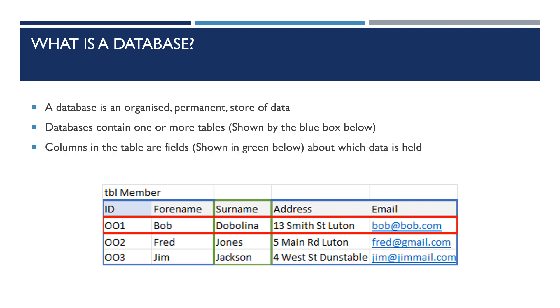Columns in the table are fields. You can see a field highlighted in green here. That field is surname. Fields are things that we hold data about.